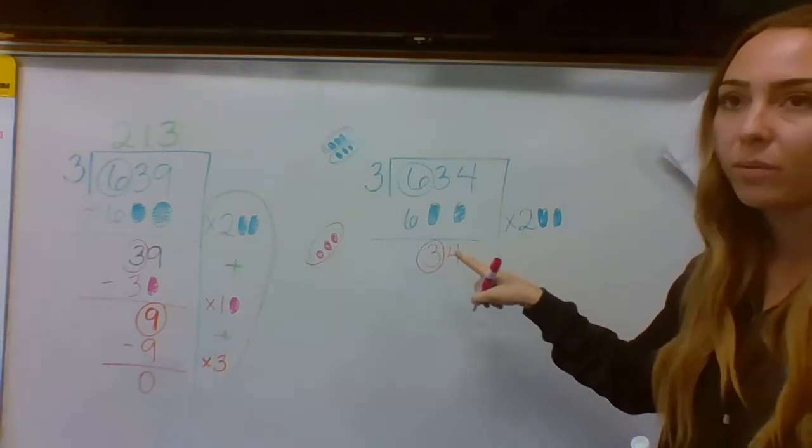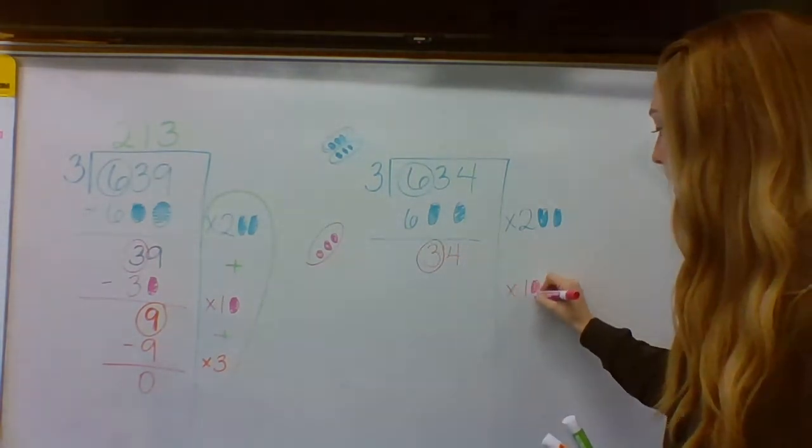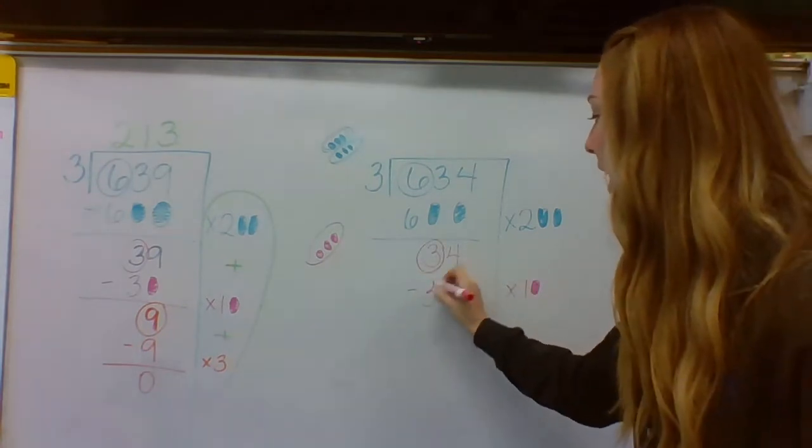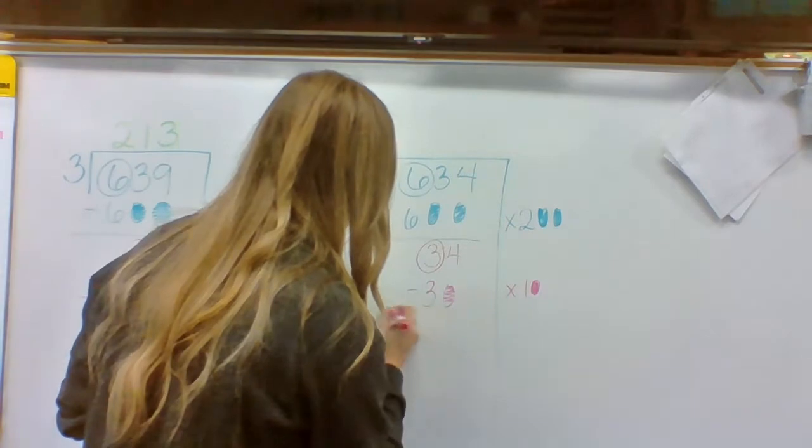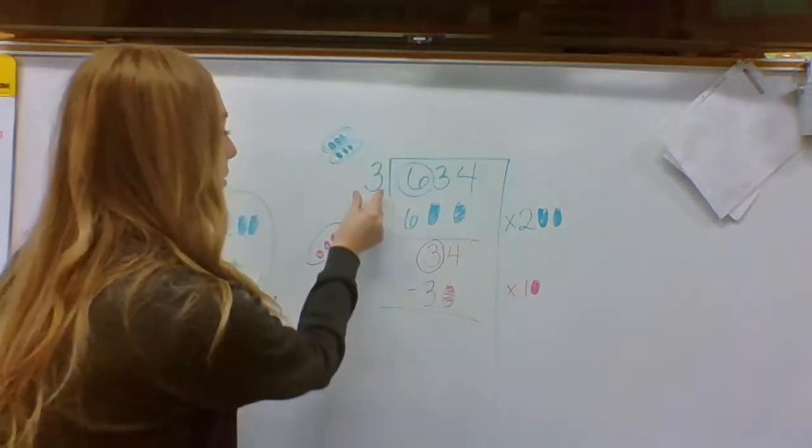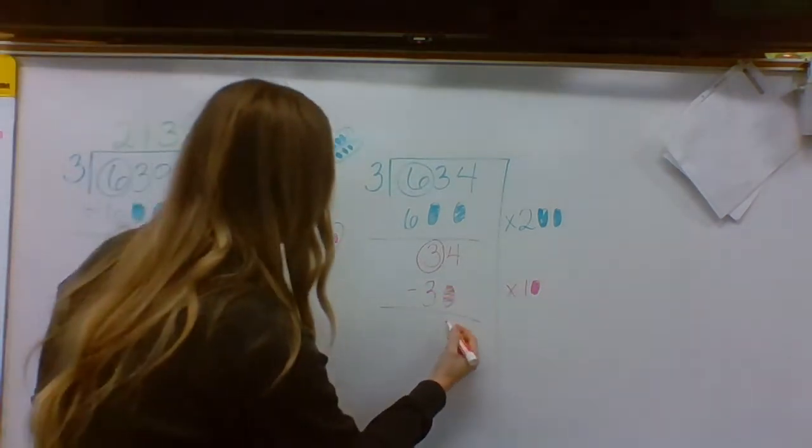Since this was not a three, it was a 30. There's one digit after I'm going to add one zero. That way I can subtract 30. After I've taken away 10 groups of three or 30, what's left is four.